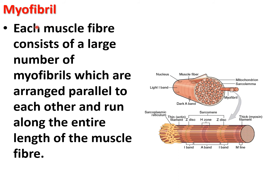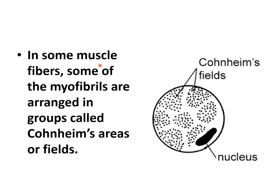Each muscle fiber consists of a large number of myofibrils arranged parallel to each other, running along the entire length of the muscle fiber. In some muscle fibers, myofibrils are arranged in groups called Cohnheim's areas or fields.